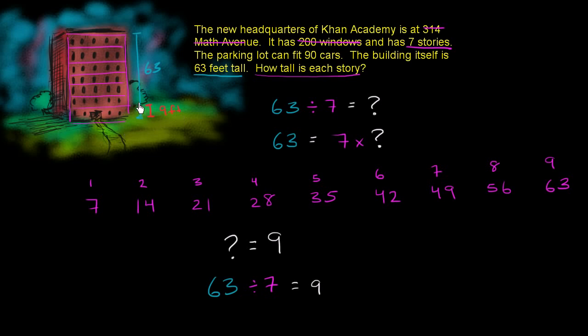Well, we have seven of them. So the first story should be nine feet. By the time we get to the second story, we should be at 18 feet. I'm adding by nine now. Third story, the top of the third story should be 27 feet. Top of the fourth story is going to be 36 feet. Top of the fifth story is going to be 45 feet. Top of the sixth story is going to be 54 feet. And then the top of the seventh story, which is also the top of the building, is going to be 63 feet.